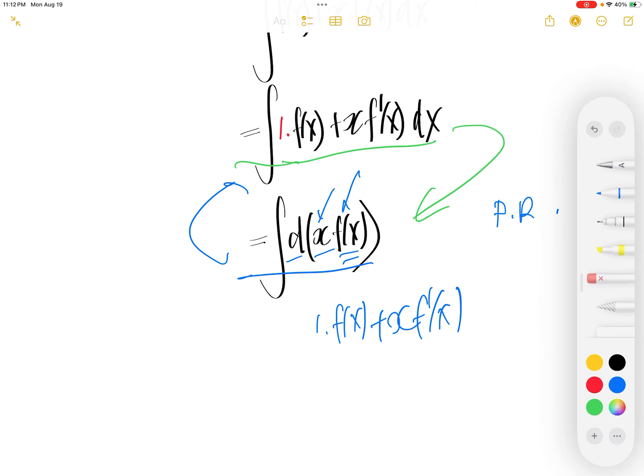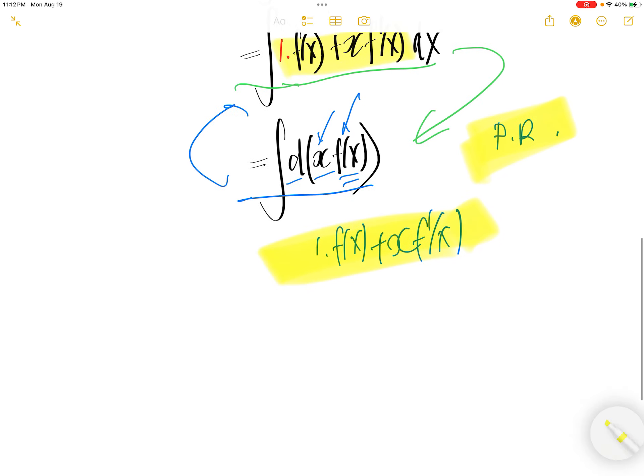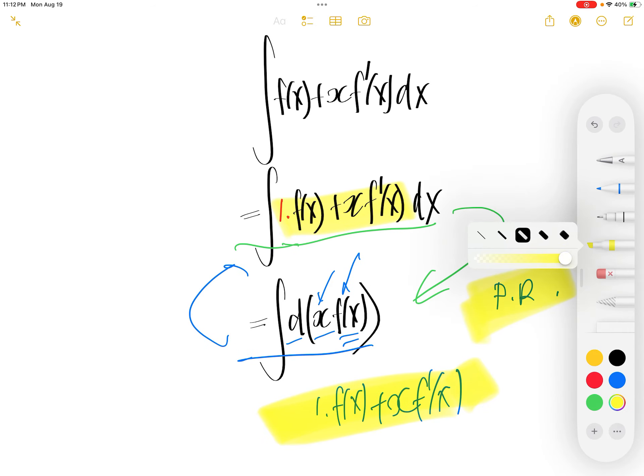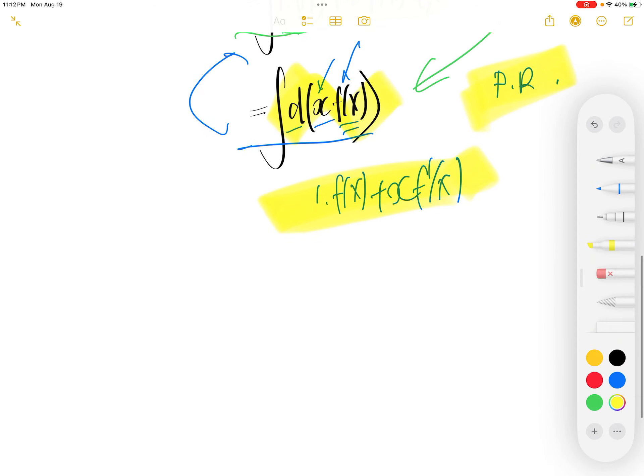That what we just written using the product rule, this piece is here. Therefore, this piece is the same thing as that.